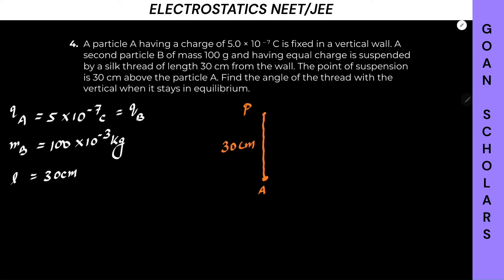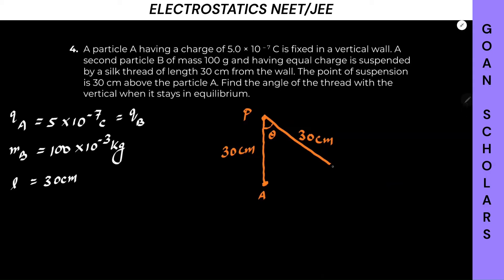Imagine any wall in your room. Particle B of mass 100 grams with equal charge is suspended by a silk thread of length 30 centimeters. So here is some point on the thread, and this is our particle B. The thread length from the suspension point P is 30 centimeters from the wall. Let's say the angle the thread makes with the vertical is angle theta.